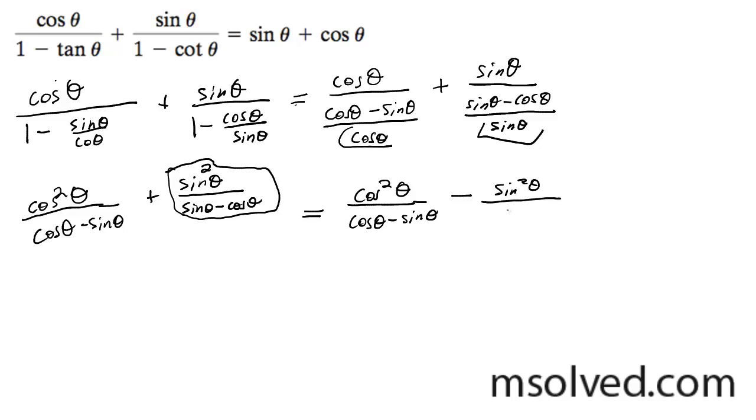And what this also does, because you multiply both the numerator and the denominator by negative 1, it flips around, so you're going to have cosine theta minus sine theta. And now you've got common denominators.